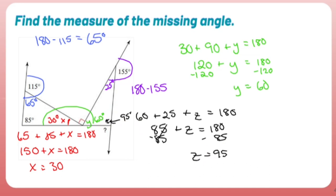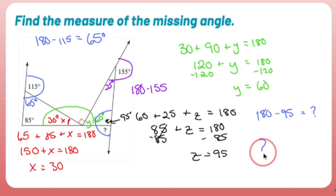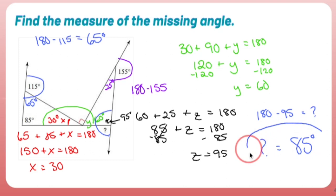Last but not least, I'm finally able to figure out the question mark. The question mark creates a straight angle with 95, so 180 minus 95 gets me 85 degrees. It took a while — it's just building a puzzle using the fact that two angles forming a straight line equal 180 and interior angles of a triangle also equal 180.